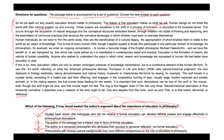Option four points out that philosophers with a diverse variety of cultural backgrounds may have different perspectives on the role of education. While this information is relevant, it doesn't necessarily weaken the author's argument about the importance of education — it simply introduces a factor that could lead to varying opinions on the topic. So option one is the correct answer because it directly weakens the author's argument.